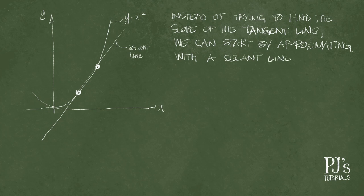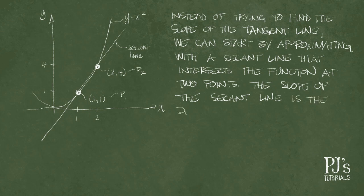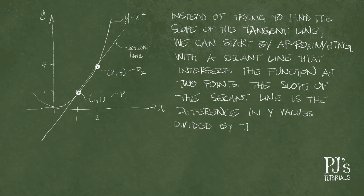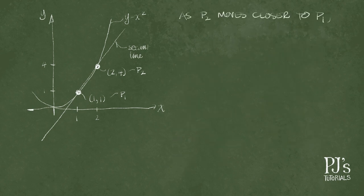We can start by drawing a secant line instead of trying to find the slope of a tangent directly. So we do this by plotting two points on the curve and drawing a line between them. In this case at x equals 1 and x equals 2, having the coordinates (2,4) and (1,1) respectively. And we can find the slope of this line by taking the difference in the y values divided by the difference in the x values. In this case, 4 minus 1 over 2 minus 1 equals 3.